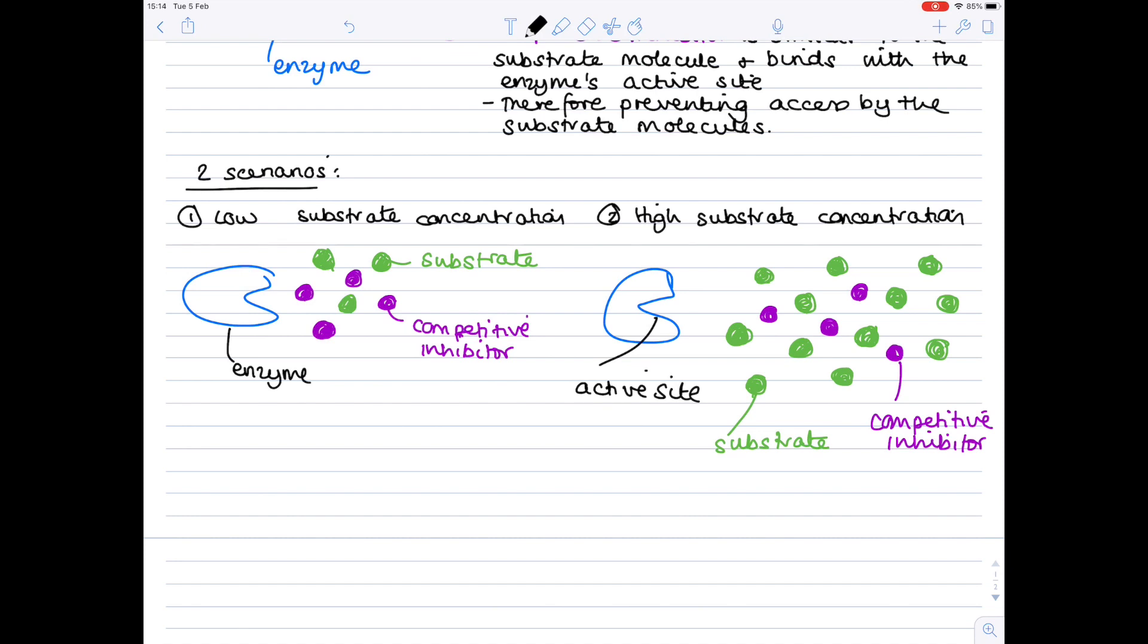However, in the second scenario we see a higher substrate concentration. We see lots of green molecules. And if we look at a matter of chance now, it's far more likely that that substrate molecule will bind to the active site. And here the competitive inhibitor will have little impact.